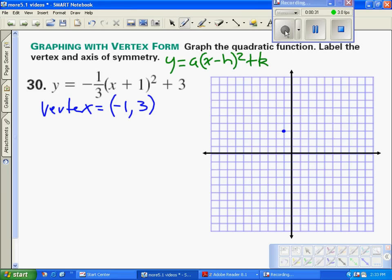My axis of symmetry is right off the vertex. In standard form we had the axis of symmetry and got the vertex. This time we have the vertex, and the axis x equals negative 1 comes right from that x-coordinate.